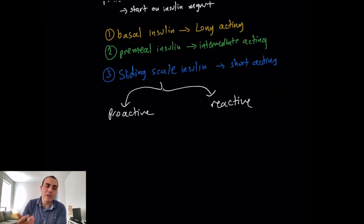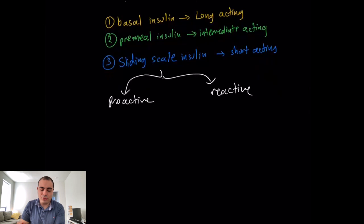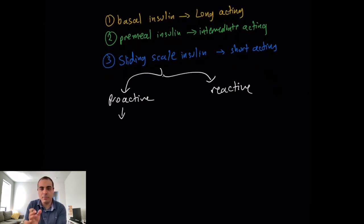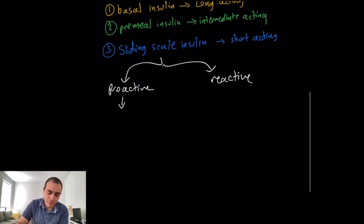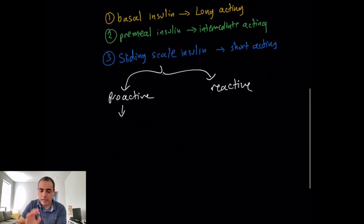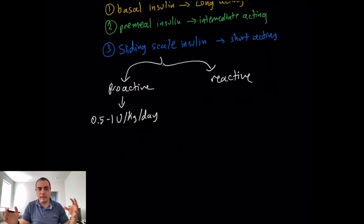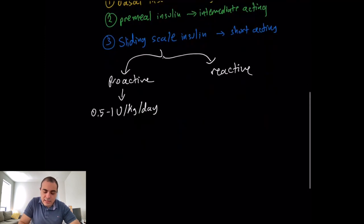If you want to be proactive, the total daily insulin dose is roughly 0.5 to 1 unit per kilogram per day — the exact number depends on whether they're type 1 or type 2. I don't memorize the exact numbers off the top of my head, but it's around that range. That total amount is then divided among basal and pre-meal components.